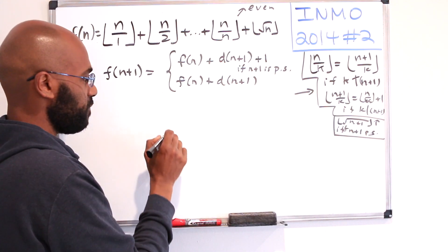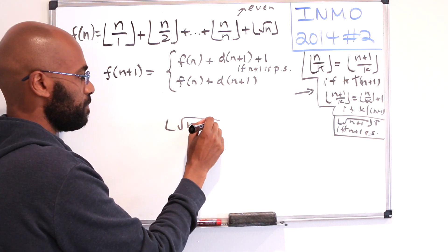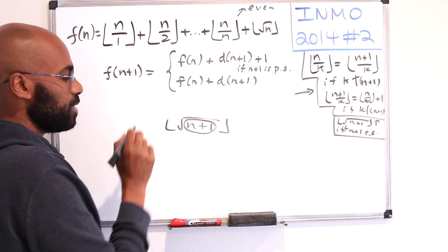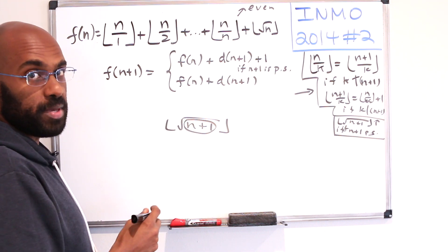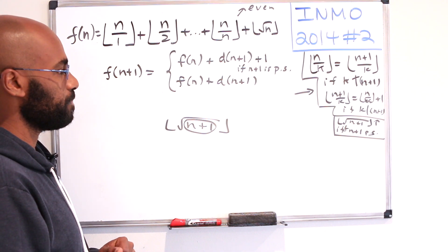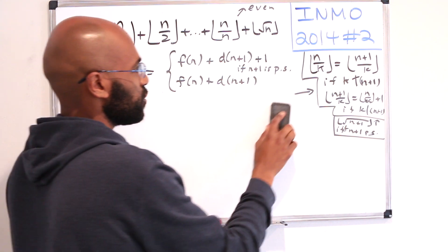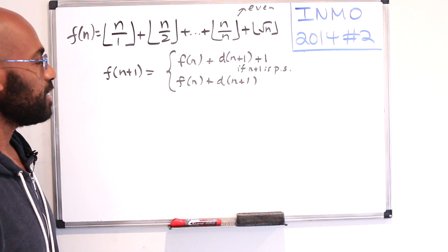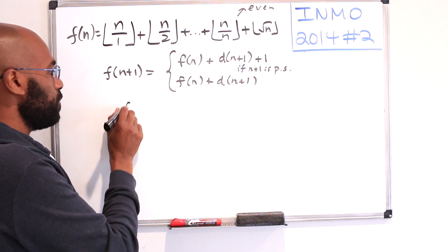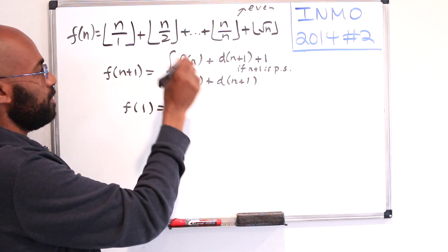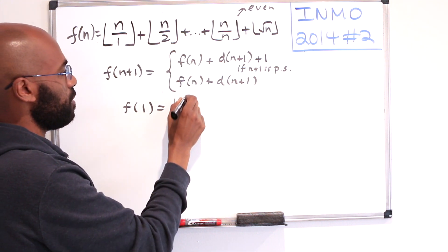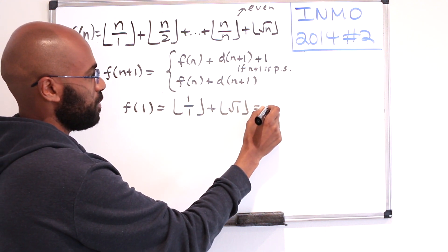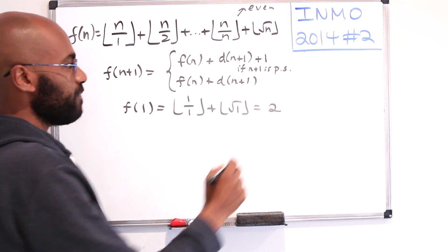All right so that establishes that piece that we needed to be able to even make this recurrence argument. The other piece is this floor of n+1 thing, the square root of n+1, and we see the only way that this is an integer is if n+1 is itself a perfect square. So it makes sense that we have the jumps at the perfect squares. So that establishes these two facts that we needed to get this recursion in the first place, so now let's analyze the recursive equation. First of all we notice that f(1), the base case of this recurrence, is the floor of 1 over 1 plus the floor of the square root of 1 which is 1 plus 1 and so is 2. So f(1) is definitely even.